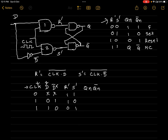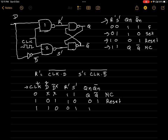From the SR latch table: when R' and S' are both 1,1, outputs are Q and Q-bar — no-change condition. When R' = 1 and S' = 0, outputs become 0,1 — reset condition. When R' = 0 and S' = 1, outputs become 1,0 — set condition. So the overall D flip-flop gives us three states: no change, reset, and set. Thank you!